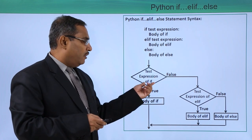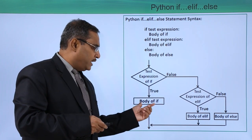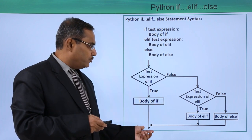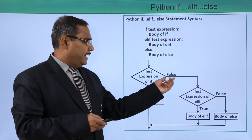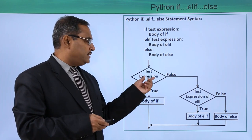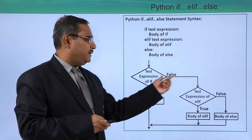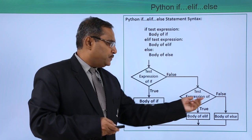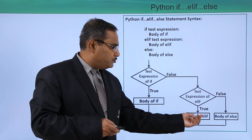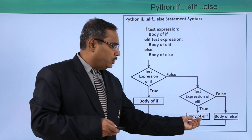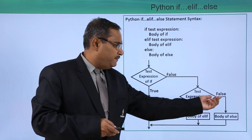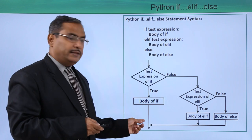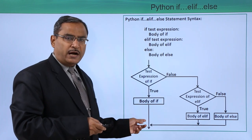In the if-elif-else flowchart: if the test expression of if is true, the body of if gets executed and control comes out. If the condition is false, it goes to the test expression of elif. If that condition is true, the body of elif gets executed. If that is also false, the body of else gets executed, and then the control merges.